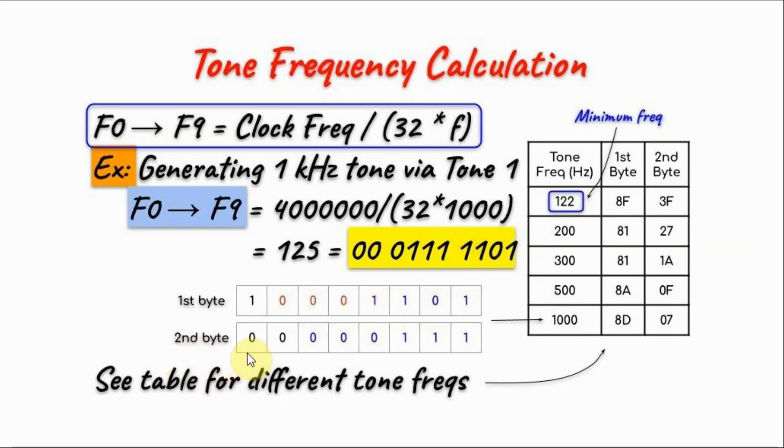And for the second byte, these two bits are always 0, and the remainder of the 10-bit value here, this being the most significant bit, will be copied into the second byte value. Therefore, to generate a 1 kHz tone, we need to send 2 bytes: the first byte is shown here, and the second byte is shown here.